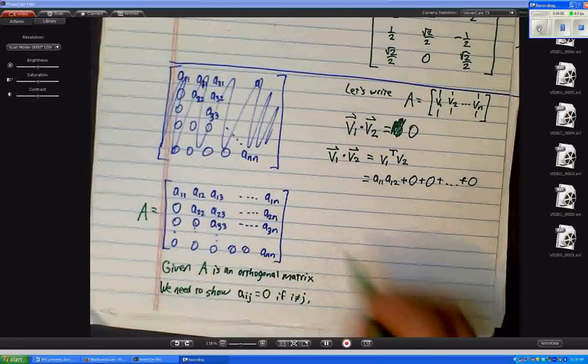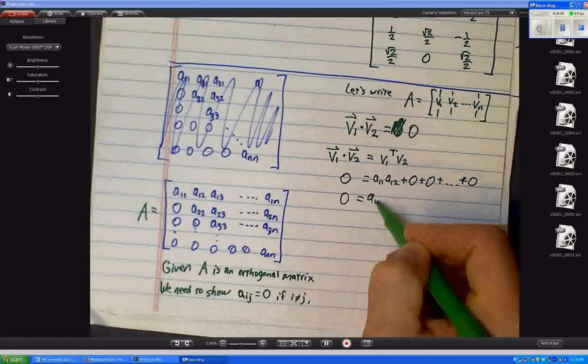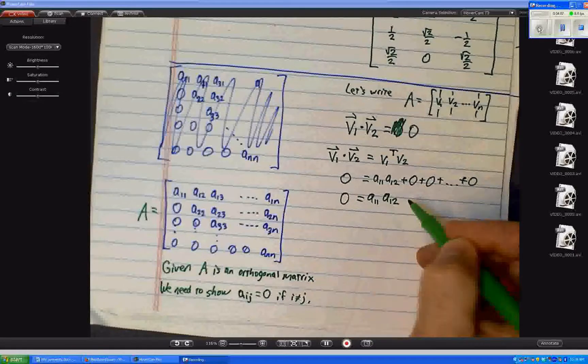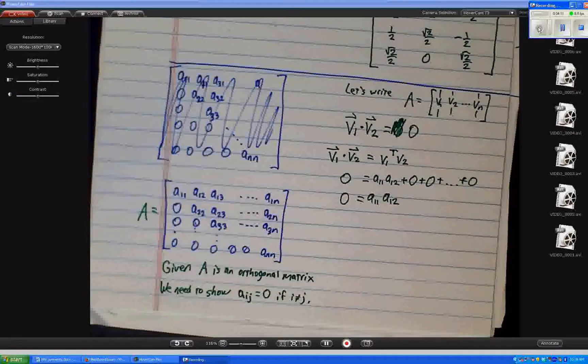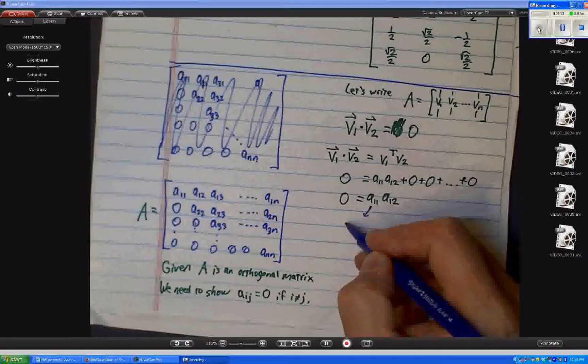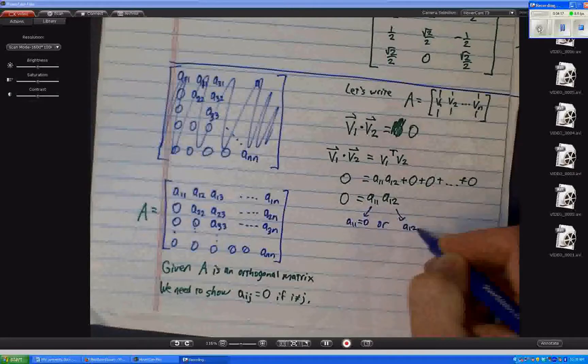So, like you said, Marla, that's the number 0. 0 equals A11 times A12. And those are numbers. So, what does that mean? It means either A11 equals 0 or A12 equals 0.